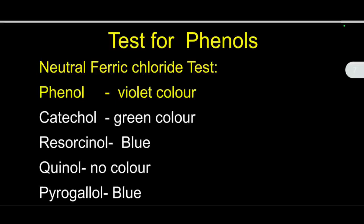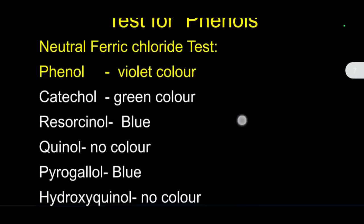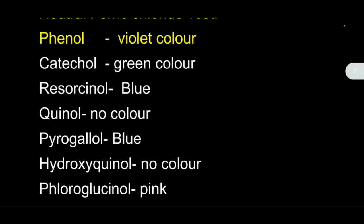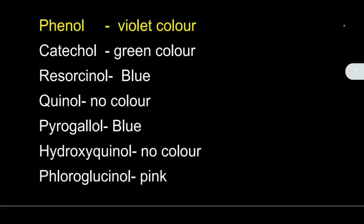The next test is the test for phenol - the functional group is phenolic OH group attached to benzene ring. The test uses neutral ferric chloride. Phenol gives violet color, catechol gives green color, resorcinol gives blue color, quinol gives no color, pyrogallol gives blue color, hydroxyquinol gives no color, and phloroglucinol gives pink color. The information I want to convey here is all phenols will not give the same color, but as per our CBSE syllabus, only phenol and salicylic acid will give violet color.